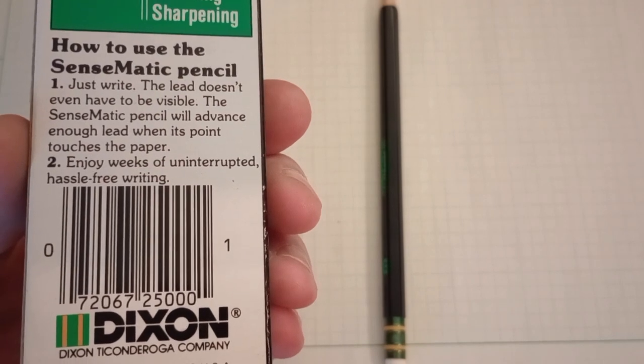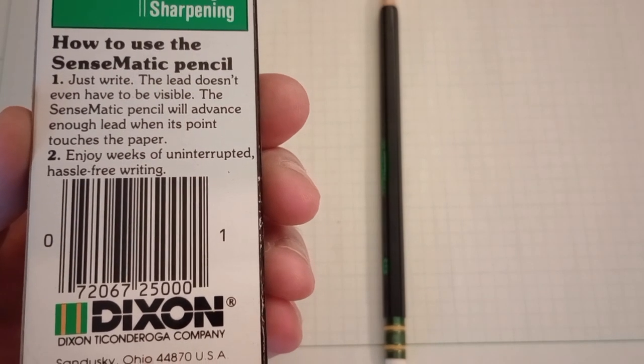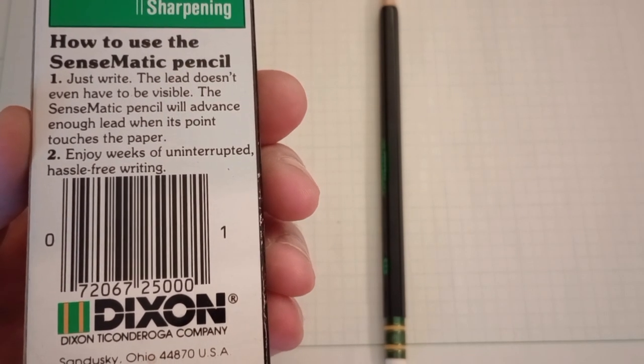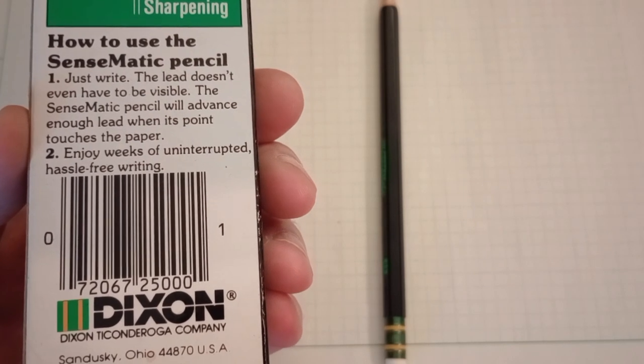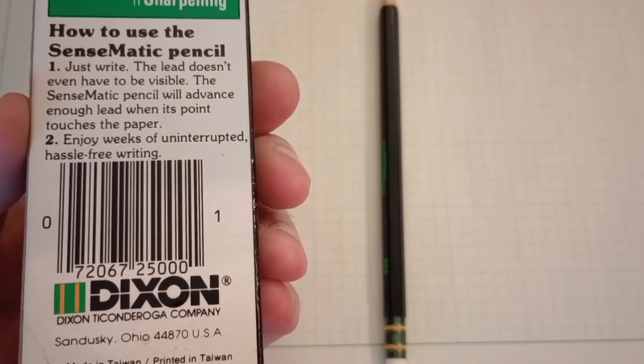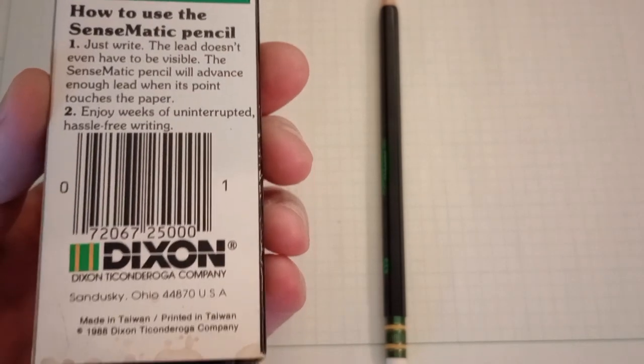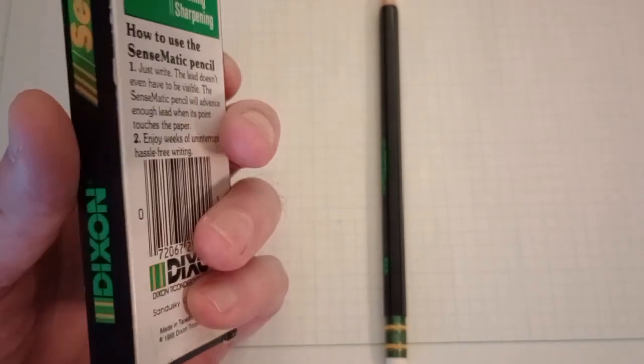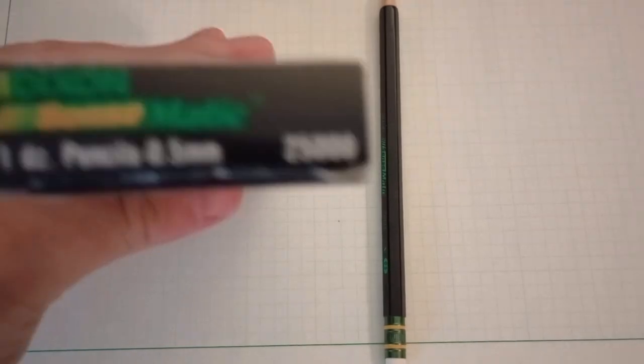How to use the Sensomatic pencil. Just write, the lead doesn't even have to be visible. The Sensomatic pencil will advance enough lead when its point touches the paper. Enjoy weeks of uninterrupted, hassle-free writing. Dixon, Ticonderoga, Sandusky, Ohio.